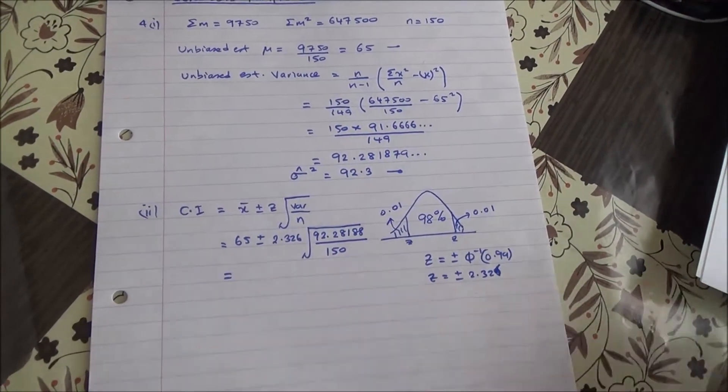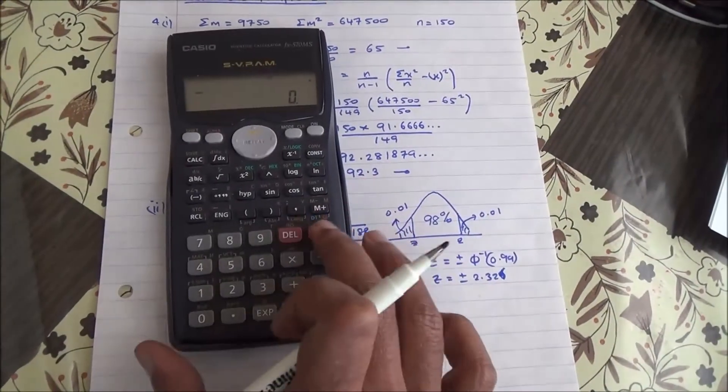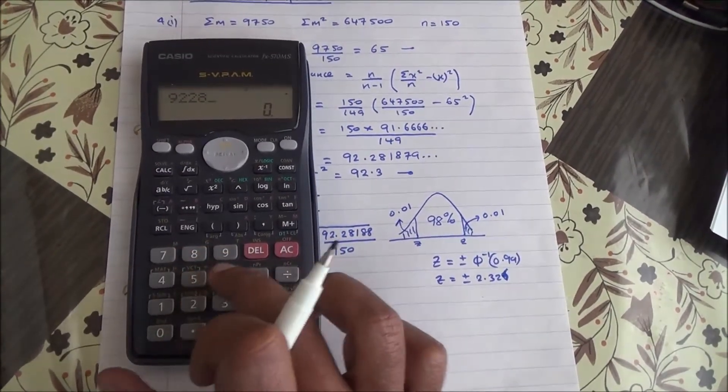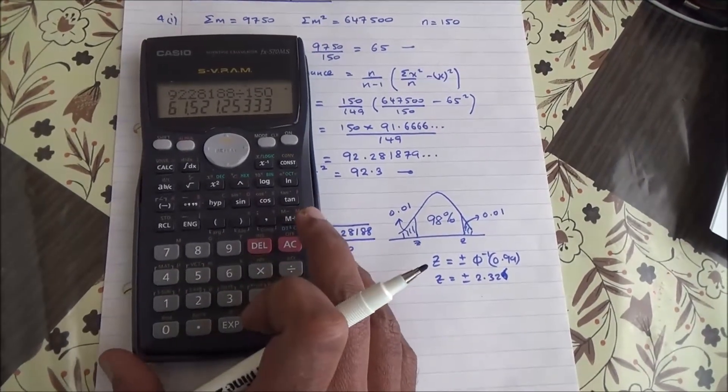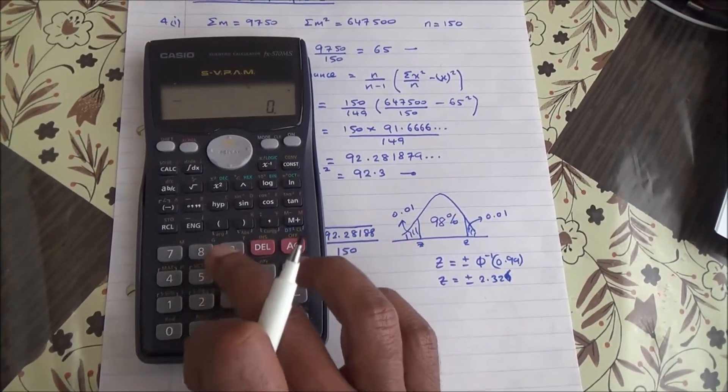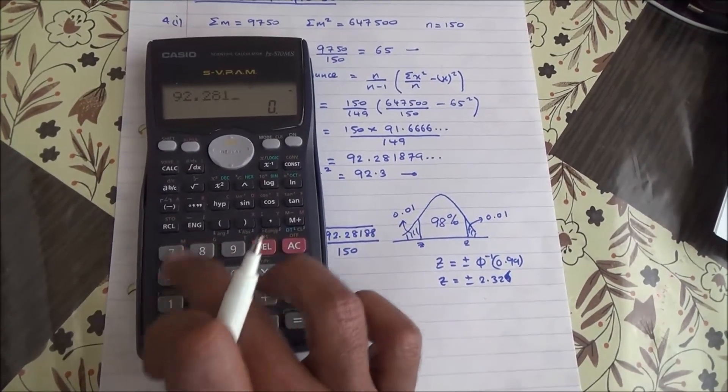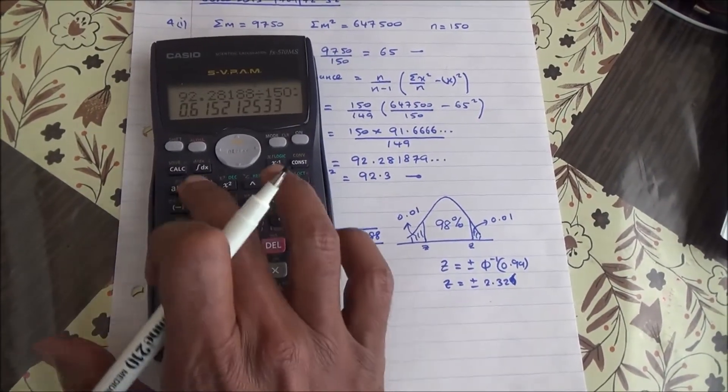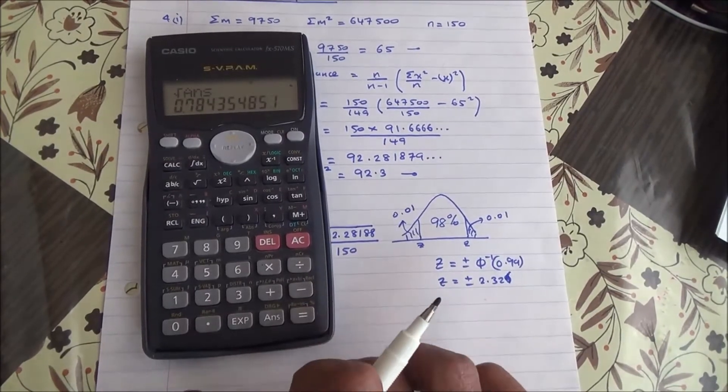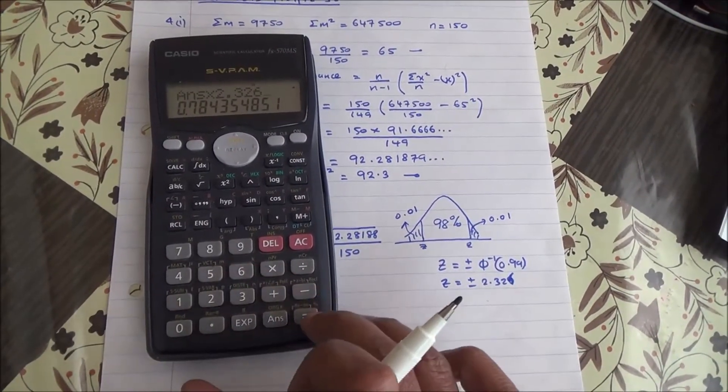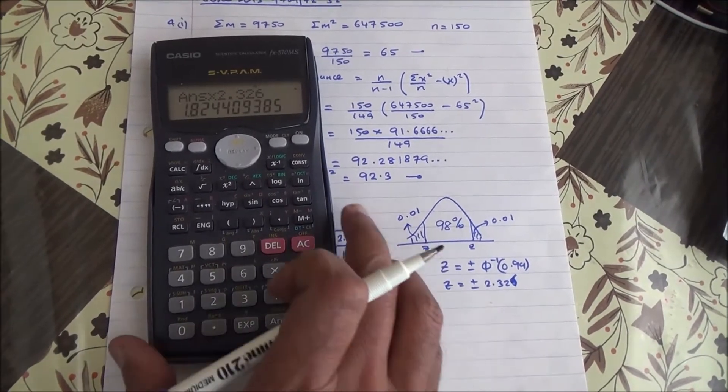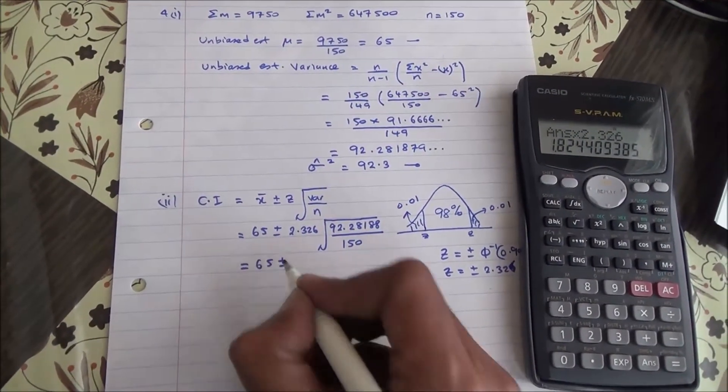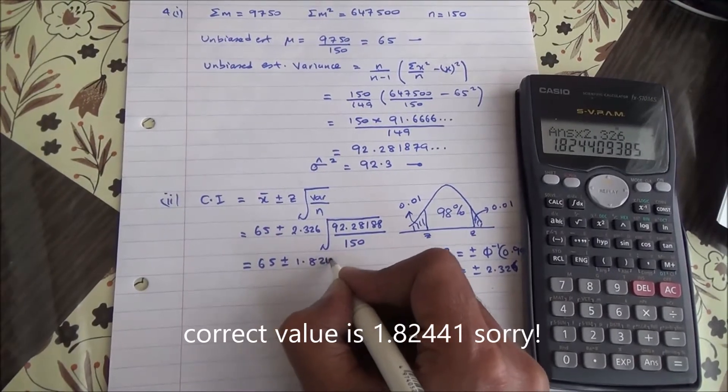Let's do this now. 92.28188 divided by 150. Then take the square root of that, you're going to get this much, times 2.326. So 1.82421.